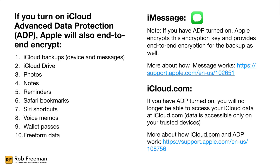One thing to note is that right now, when you use iCloud, you have access to iCloud.com to gain access to your iCloud data from anywhere, even if you don't have one of your devices. So if you don't have your iPhone but you want to check your email, check your messages, or use Find My, you can use iCloud.com. But once you have Advanced Data Protection turned on, you can't access that anymore — only your trusted devices are able to access your data.